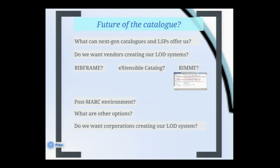How about BibFrame? BibFrame is LC's answer to the post-MARC record. It is based in RDF triples, but it's still a long way from being a viable replacement. And again, what do we do with our legacy MARC records? We'd have to crosswalk them to the BibFrame format — what data will be saved, what data will be lost. The Extensible Catalog (XC) offers tools for experimentation with MARC and other library metadata. It has potential for bulk creation of linked data in three ways: RDF/XML, RDFa, and SPARQL. It's also a platform for the development of other linked data tools.